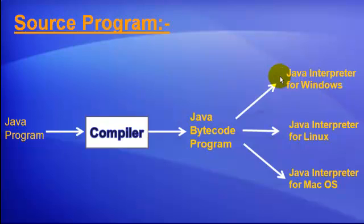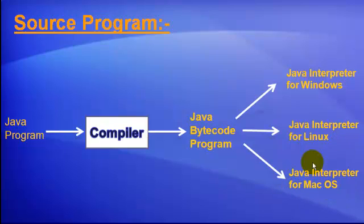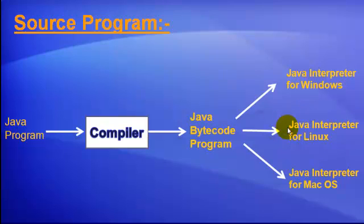So how does this happen? There is a special piece of software that we call the Java interpreter or the Java Virtual Machine, which is specific for a particular platform — for example, Java interpreter for Windows, Java interpreter for Linux, Java interpreter for Macintosh. The Java bytecodes generated by the compiler are forwarded to the Java interpreter or JVM for the specific platform, and it is the JVM that translates our Java bytecodes into the target platform.